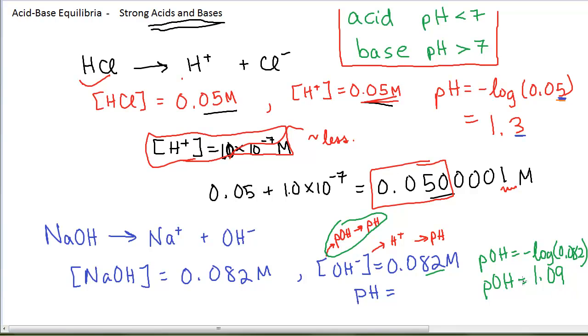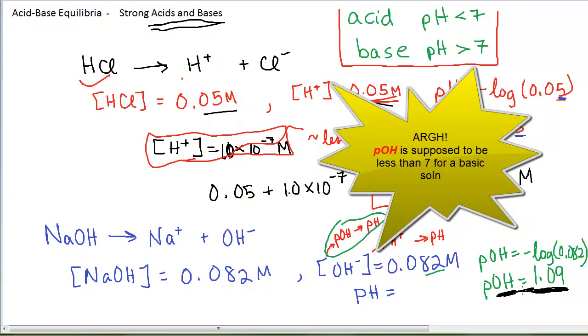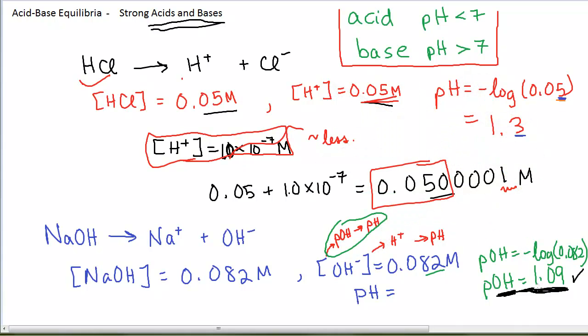Now, if I had accidentally thought this was the pH, just take the negative log of 0.082, because that's what we did up above, bells and whistles ought to be going off in my head, because this is an acidic pH, and I don't have an acid. I have a base, but it's not a pH. It's a pOH, and for a basic solution, the pOH is supposed to be less than 7. This is an okay pOH for a basic solution, but it is not an okay pH of a basic solution. Then my pH is 14 minus my pOH, which is 1.09, and so my pH is 12.91, which is indeed a basic pH.